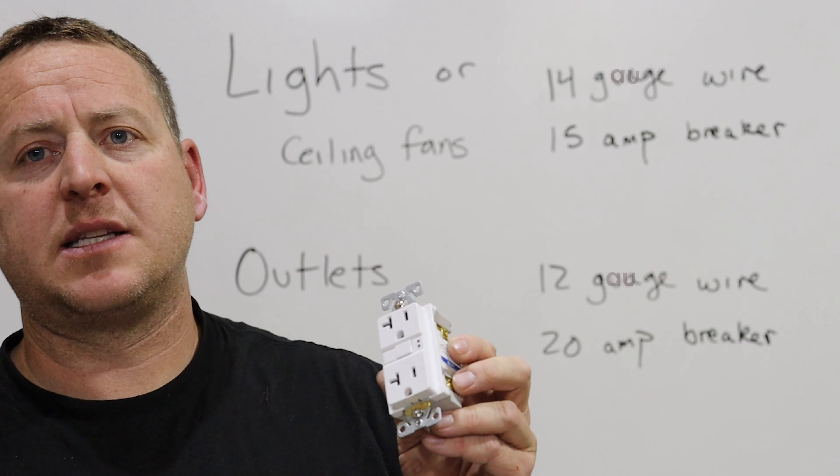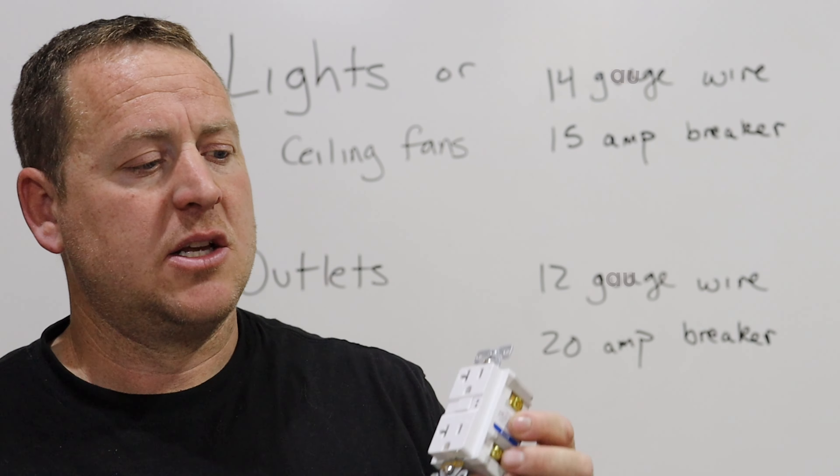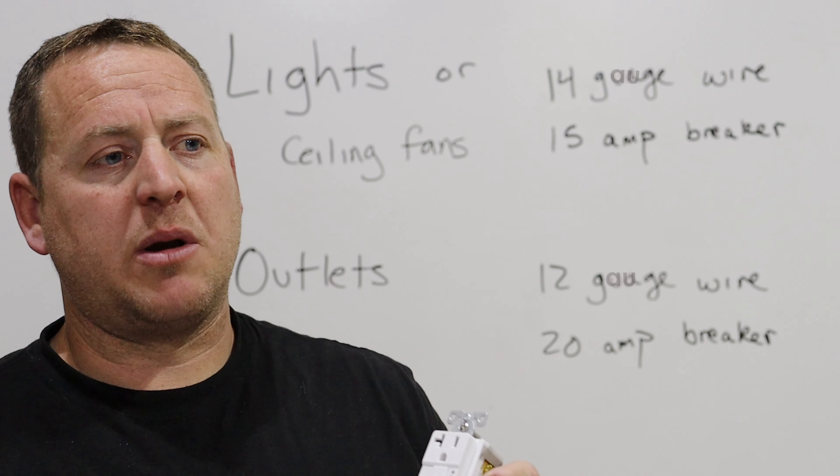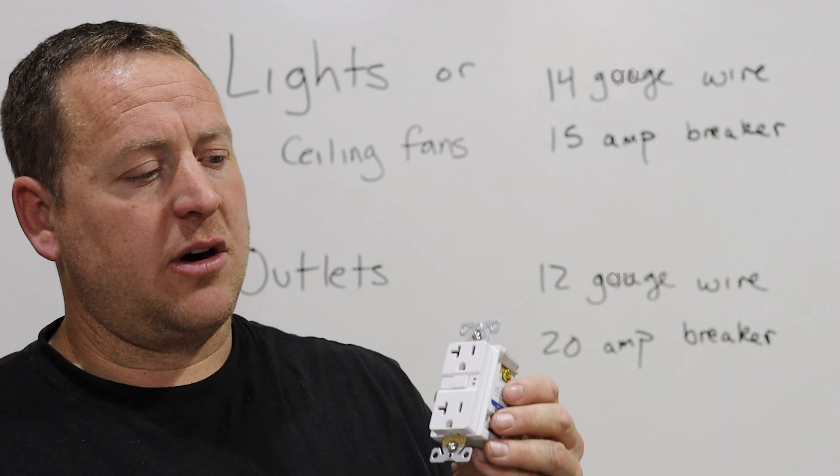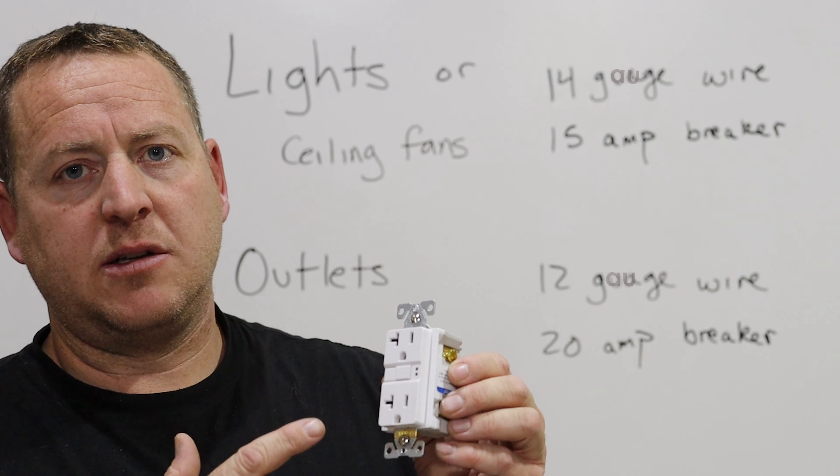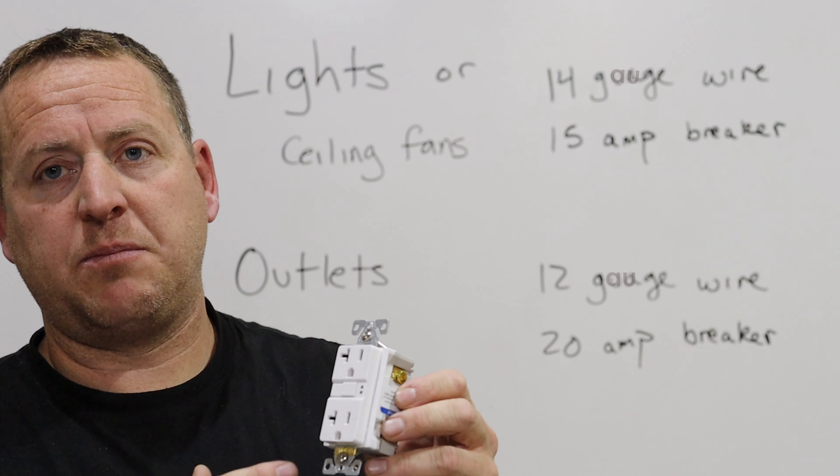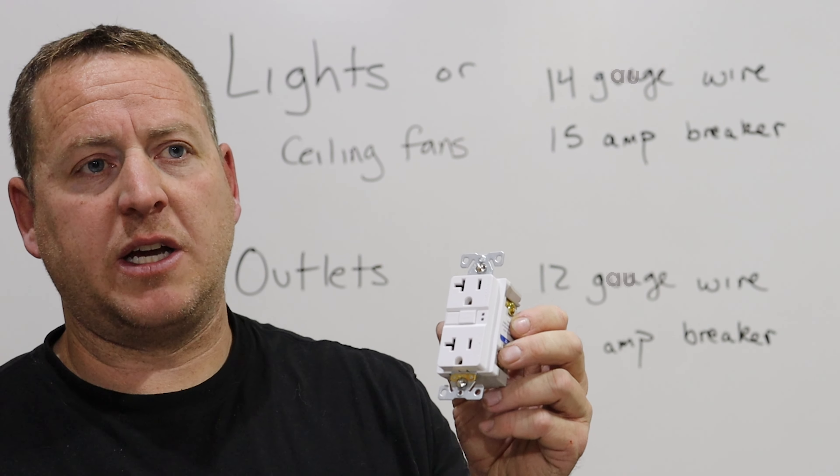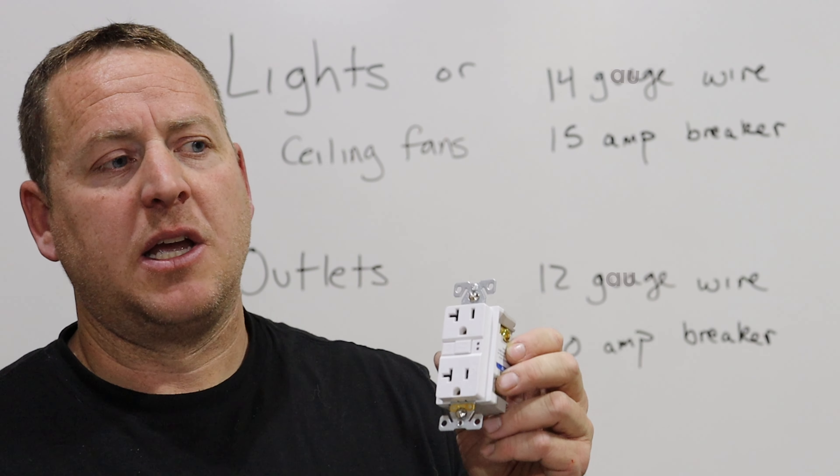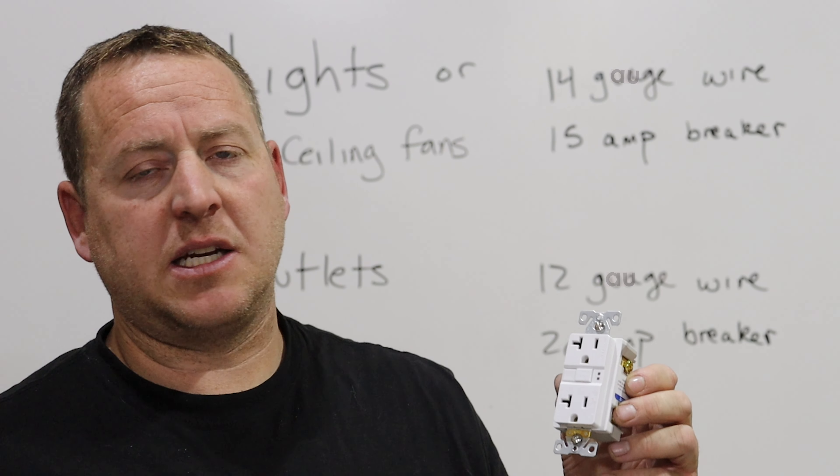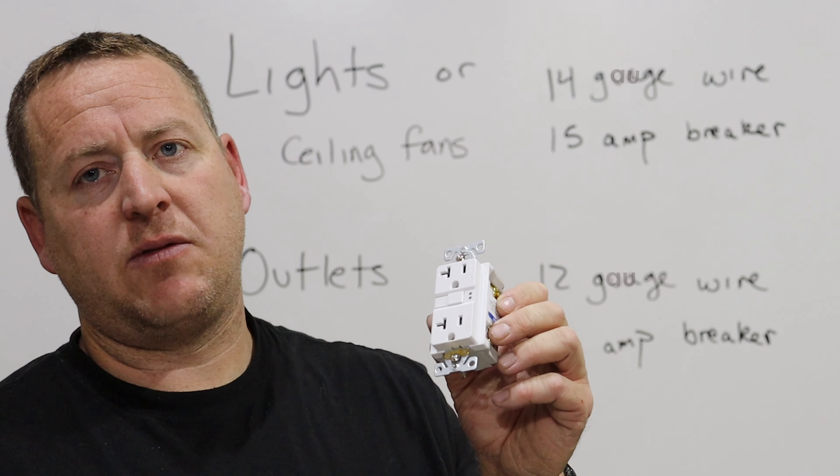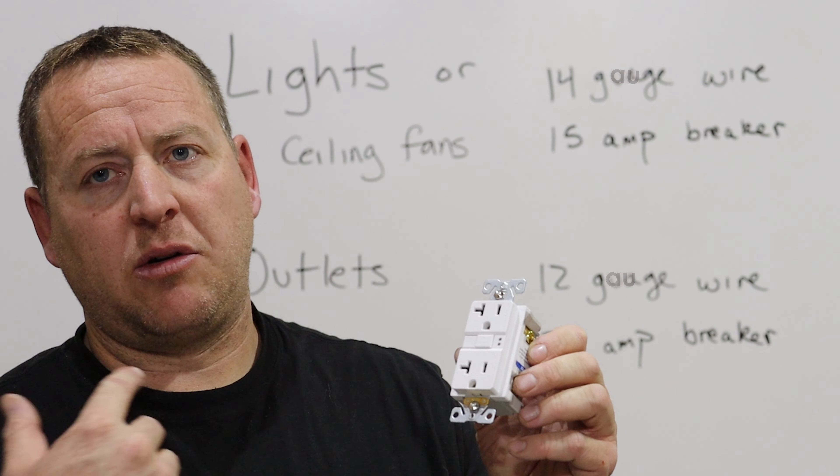They do make some outlets rated for 15 amp—you don't want to use those on this circuit. You want to make sure that whatever device you have matches your breaker. If you have a 15 amp outlet or switch, you want to make sure your breaker is also 15 amp. If even one device in a circuit is only 15 amp, you'd want to use a 15 amp breaker to power the circuit.